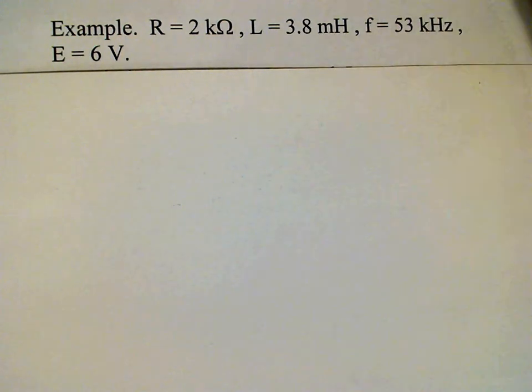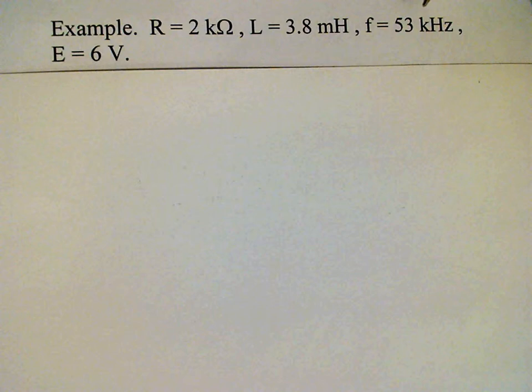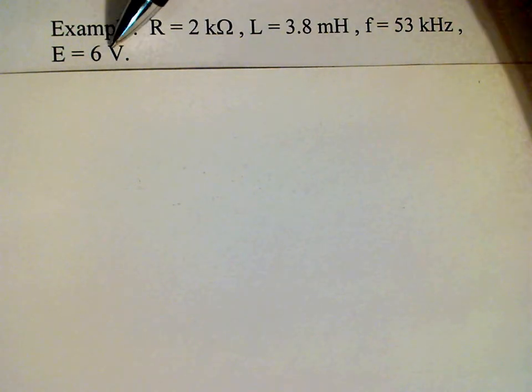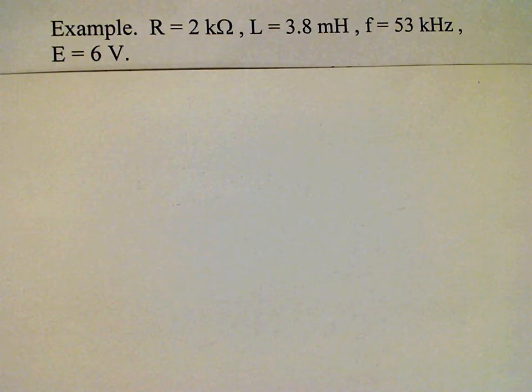We're given values for the components: 2 kΩ for the resistor and 3.8 mH for the inductor, and the source has frequency 53 kHz and a voltage of 6 volts.